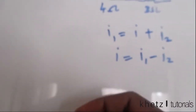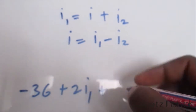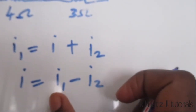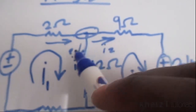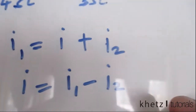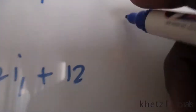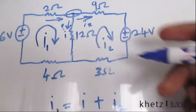Starting with the equation of the first mesh: negative 36 plus 2i1, and when we get to the 12-ohm resistor shared between the two meshes, the unknown current is i1 minus i2. Checking the direction — i1 goes in that direction across the 12-ohm resistor, so that term is positive: 12 times (i1 minus i2). Then finally we have the 4-ohm at the bottom: 4i1.